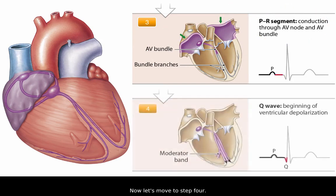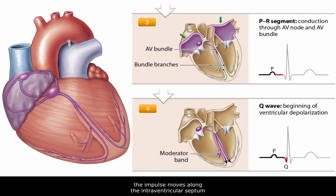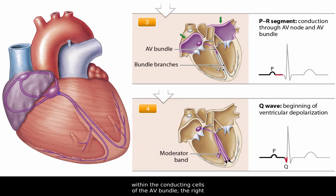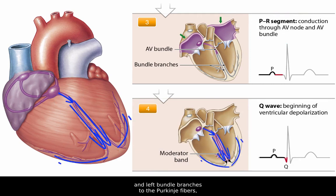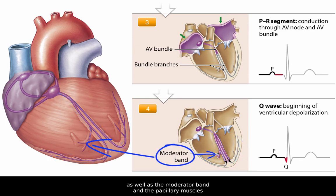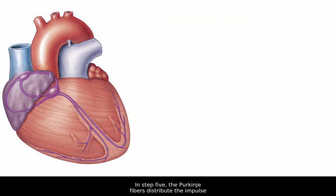Now let's move to step four. As atrial contraction completes, the impulse moves along the interventricular septum within the conducting cells of the AV bundle, the right and left bundle branches to the Purkinje fibers, as well as the moderator band and the papillary muscles of the right ventricle.